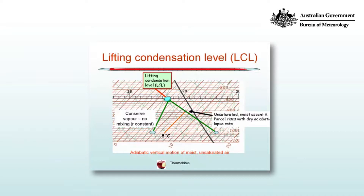Take a parcel of air from its starting pressure — in this case, 1000 hPa. We lift the parcel from its initial temperature, which in this case is 16°C, and lift it along a dry adiabatic. Unsaturated but moist ascent, where a parcel of air contains water vapour, can be approximated as a dry adiabatic. So the parcel rises with a dry adiabatic lapse rate. For this particular example, a parcel at 16°C at 1000 hPa cools to 8°C at 900 hPa.